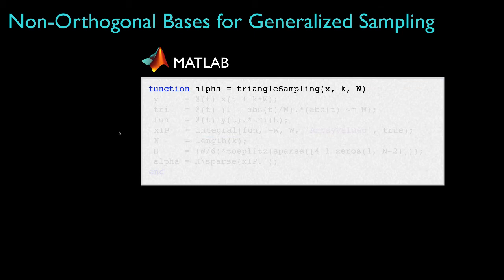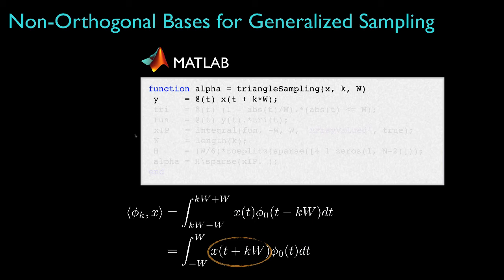To sample an arbitrary function like the one I just defined, I wrote a MATLAB function that I call triangle sampling. The inputs to this function are x, which is the reference to a function that defines the signal I'm sampling, and that would be the sinusoid that I just set up; k, which is an array of integer indices that specify the spatial location of the basis functions over which I'll sample; and w, which specifies the width of the basis functions.